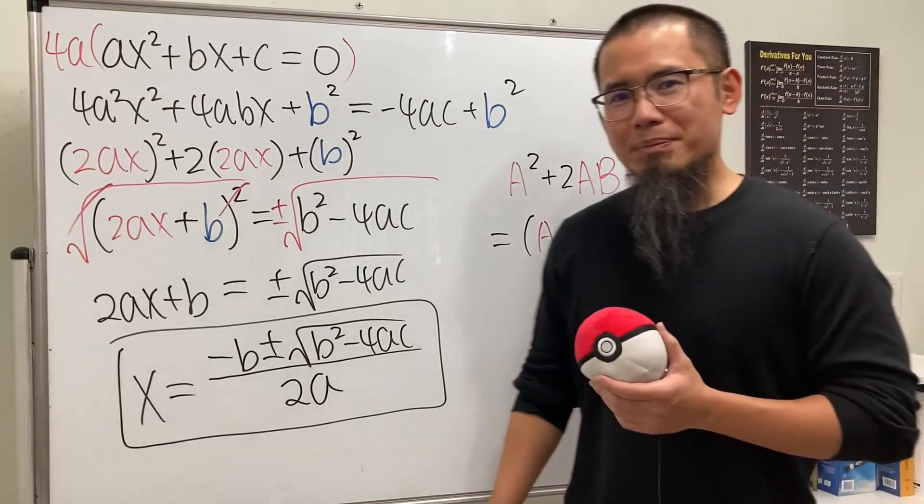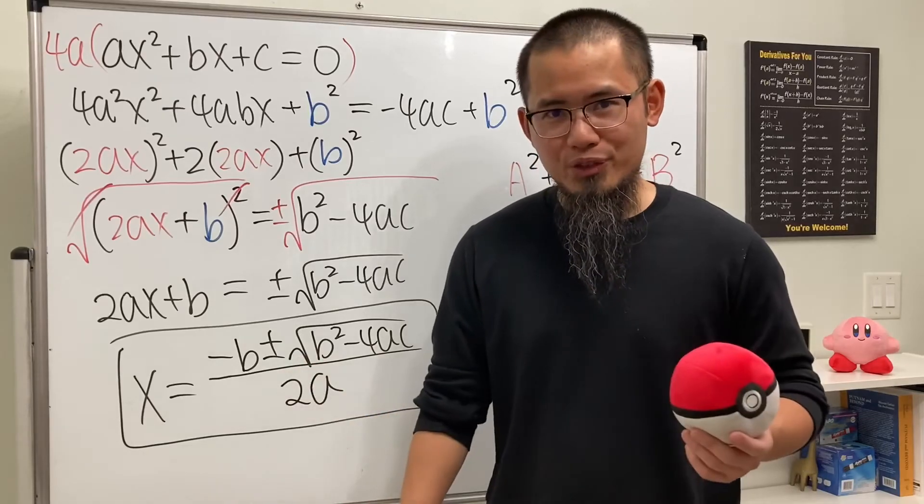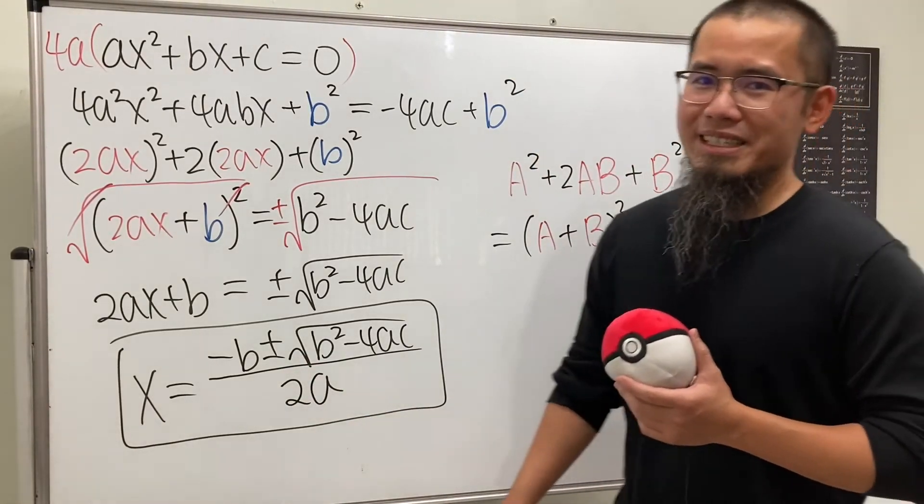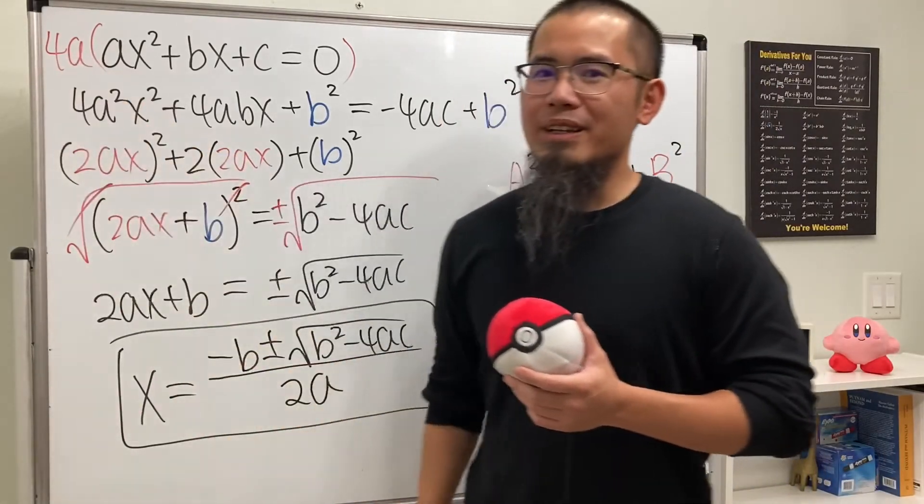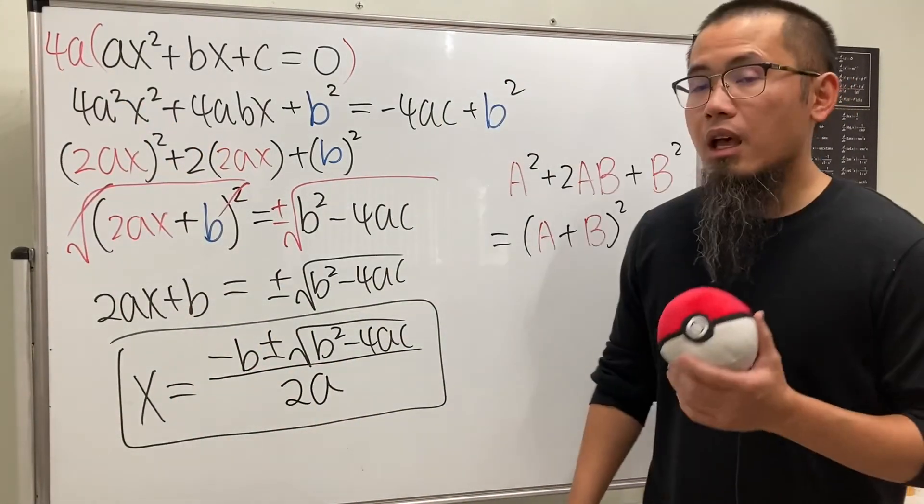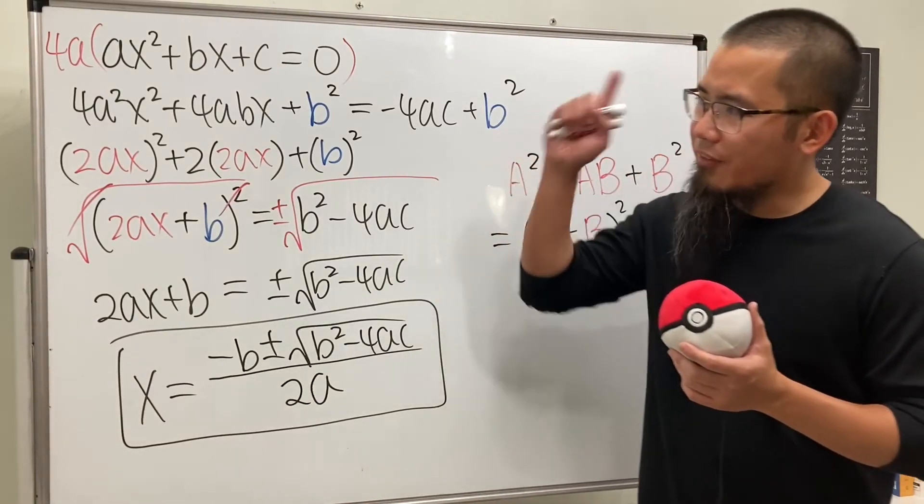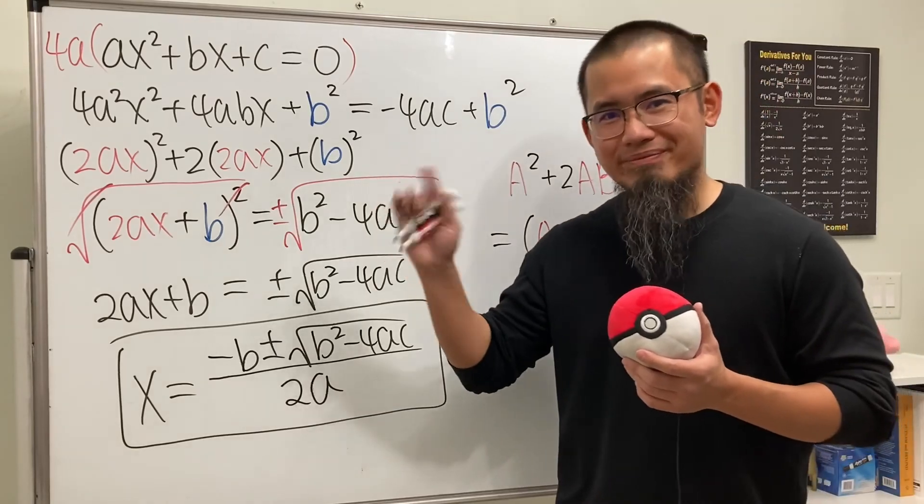So what do you guys think? Which one is better, completing the square or the quadratic formula? I would say completing the square. But sometimes, if you know what to do, you can actually make it even easier. And if you guys want to see another example on comparing completing the square and the quadratic formula, check out that video right over there. I'll see you guys in that one. Bye!